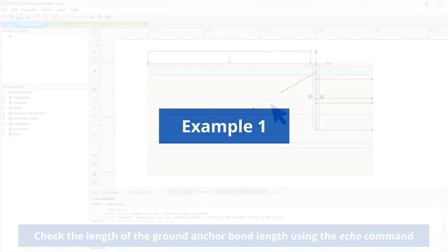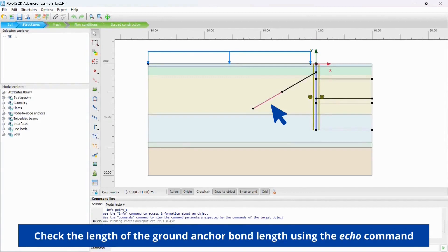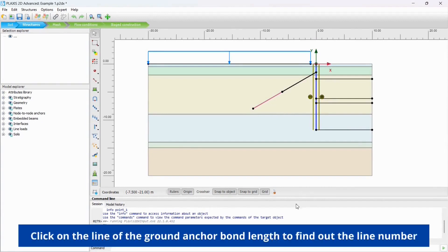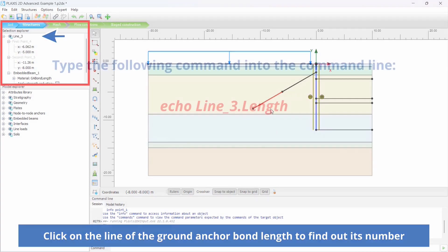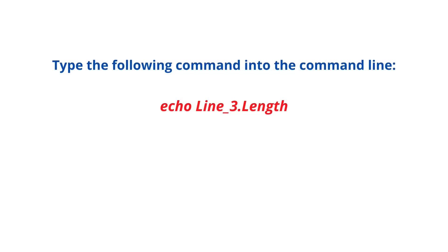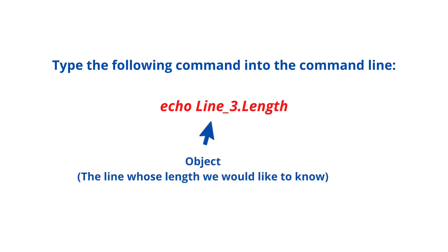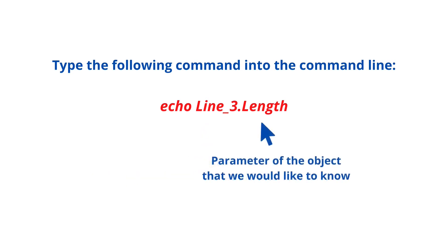Example 1: Check the length of the ground anchor bond length using the ECHO COMMAND. Click on the line of the ground anchor bond length to find out the line number. This is line 3. Type the following command into the command line: ECHO Line 3 dot length. Line 3 is an object — a line whose length we would like to know. Length is a parameter of the object that we would like to know.